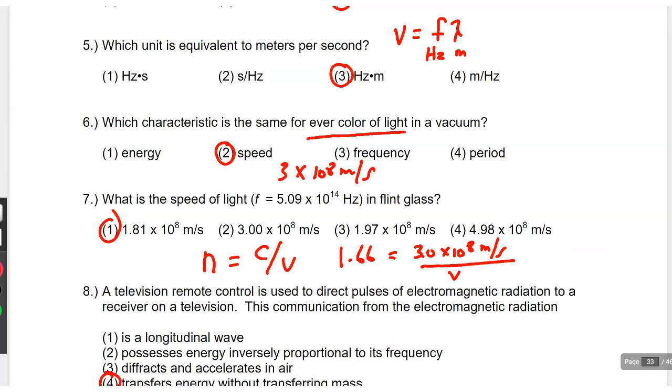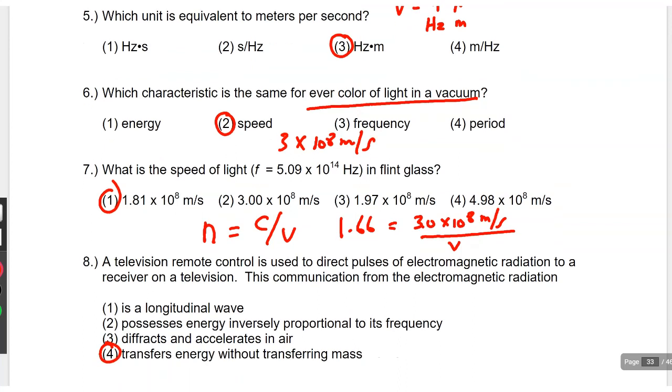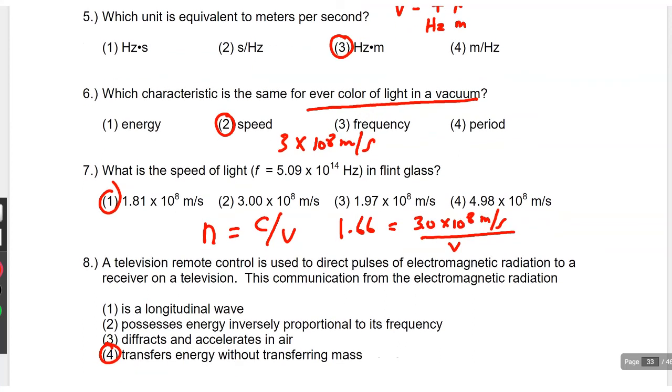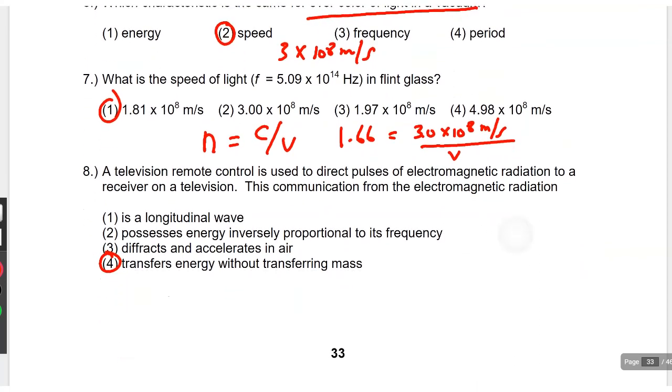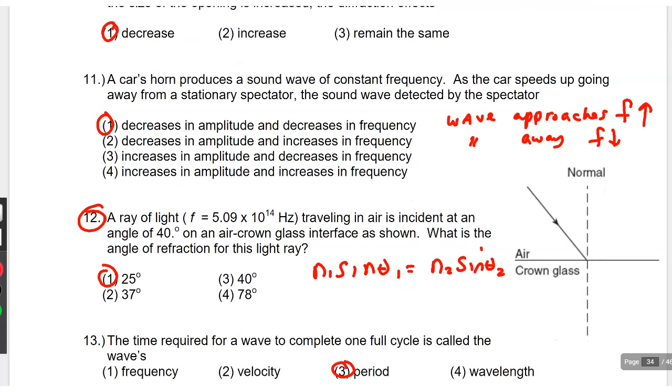All electromagnetic radiation, all light, all colors have the same speed. Three times ten to the eighth. So, radio waves have that speed and x-rays and gamma and microwaves.